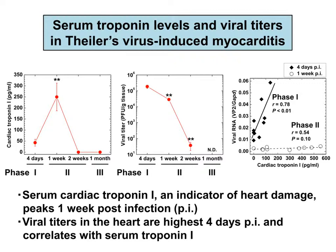We identified serum troponin as an indicator of heart damage and viral titers in the heart. Troponin was detected on day 4 in Phase I, peaked at 1 week in Phase II, and became undetectable by two weeks in Phase III. The middle panel shows that infectious virus was detectable on day four, declined by two weeks, and became undetectable at one month.